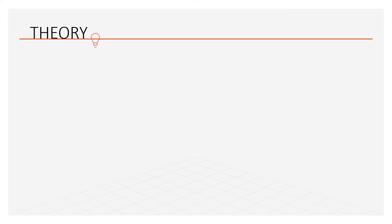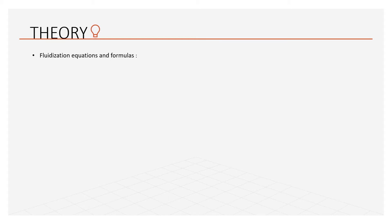For the next two slides, I am going to talk about the fluidization theories. We will be looking into the important equations and formulas for fluidization. The first one is the Froude number. The equation for Froude number is N_Fr = V² / (g·d_p). This equation is the criterion to determine the nature of fluidization.